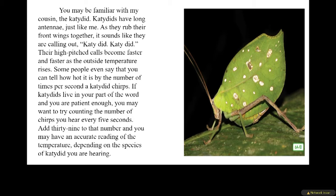You may be familiar with my cousin, the katydid. Katydids have long antennae, just like me. As they rub their front wings together, it sounds like they are calling out, katydid, katydid. Their high-pitched calls become faster and faster as the outside temperature rises. Some people say that you can tell how hot it is by the number of times per second a katydid chirps. If katydids live in your area, try counting the number of chirps every five seconds, add 39 to that number, and you may have an accurate reading of the temperature.